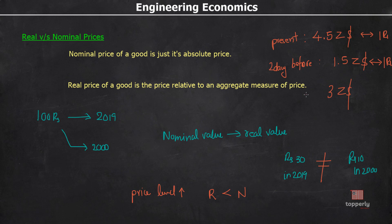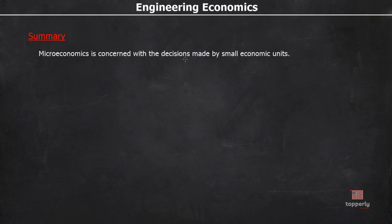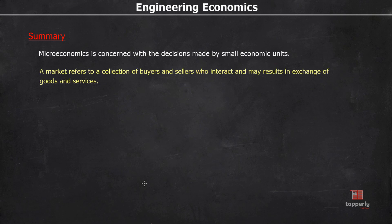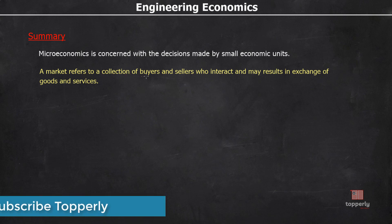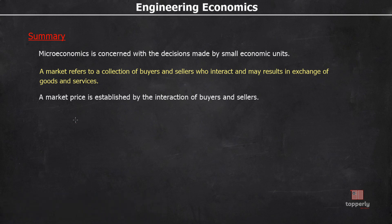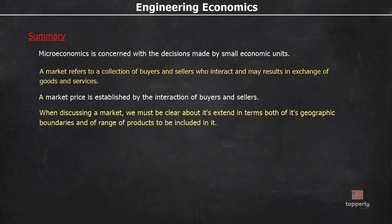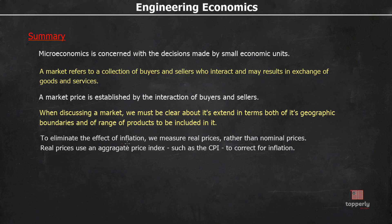To sum up this lecture: microeconomics is concerned with decisions made by small economic units; a market refers to a collection of buyers and sellers who interact and may result in exchange; a market price is established by the interaction of buyers and sellers; when discussing a market we must be clear about its geographic boundaries and the range of products included; and to eliminate the effects of inflation, we measure real prices rather than nominal prices, using an aggregate price index such as the Consumer Price Index (CPI) to correct for inflation.